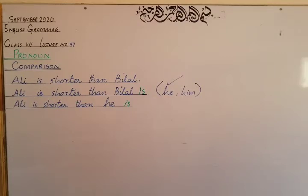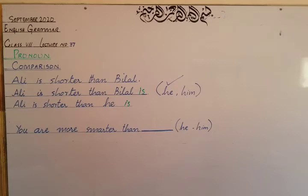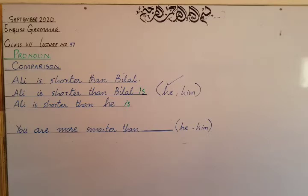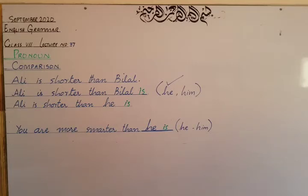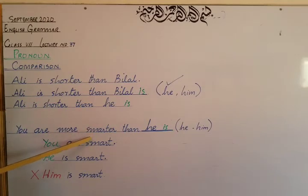Let's see one more example: You are smarter than dash. The options are 'he' or 'him.' 'He' is the subjective pronoun and 'him' is the objective pronoun. The comparison here is of 'you,' and 'you' is used as a subject. So a subjective pronoun is compared with a subjective pronoun. Between 'him' and 'he,' the subjective pronoun is 'he.' So we write: You are smarter than he is.